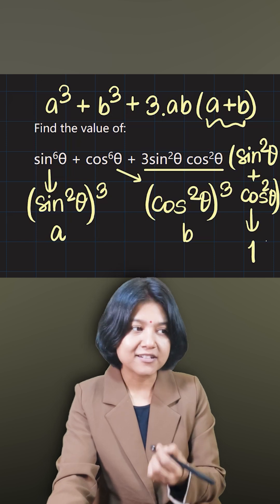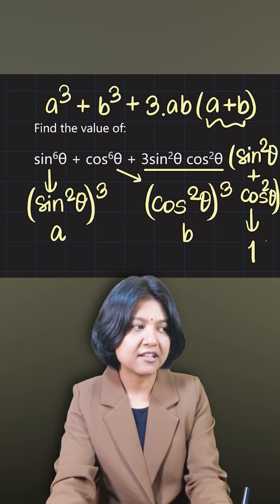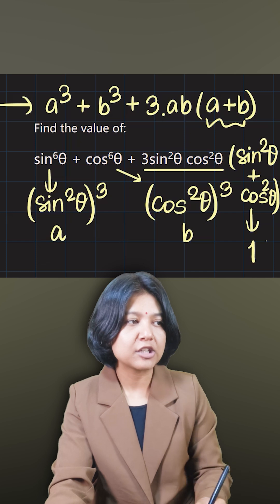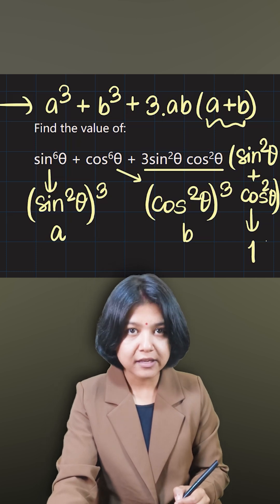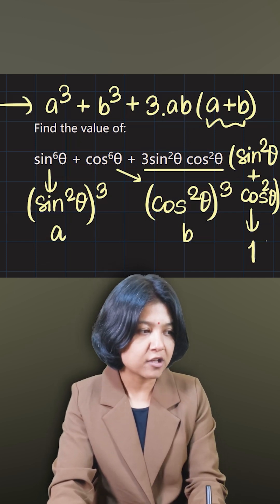That is how we'll manipulate. And by looking at each of the terms, I clearly see that it's in the form of a cubed plus b cubed plus 3ab times a plus b. This is an expansion for a plus b the whole cube.